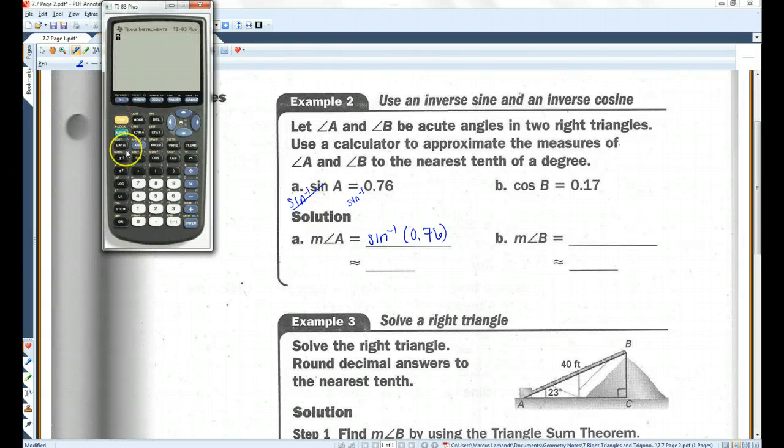So, second sine, that should give you the inverse sine .76. 49.5.